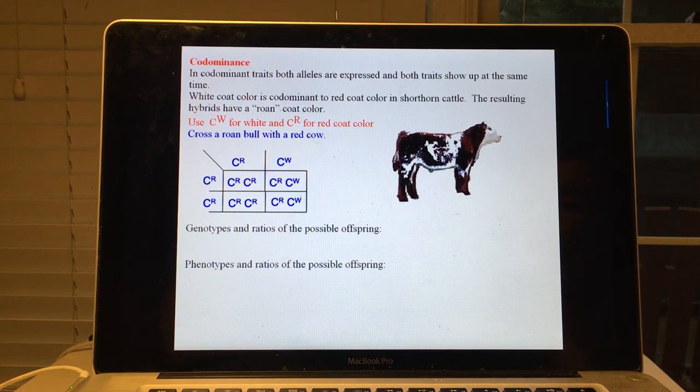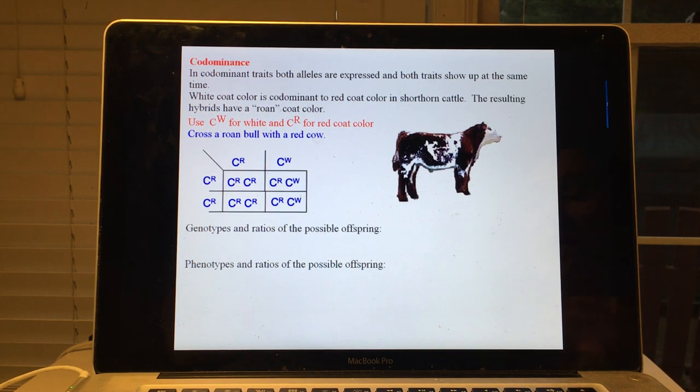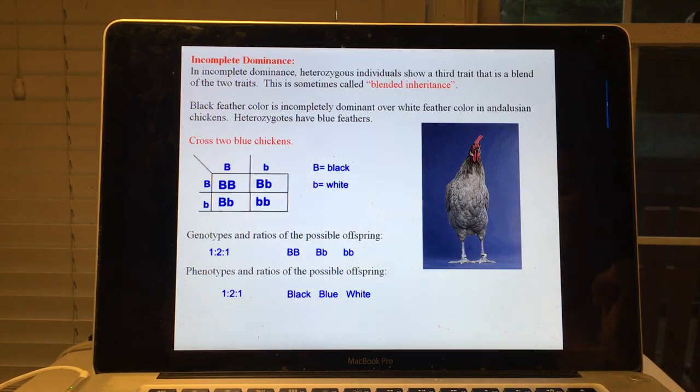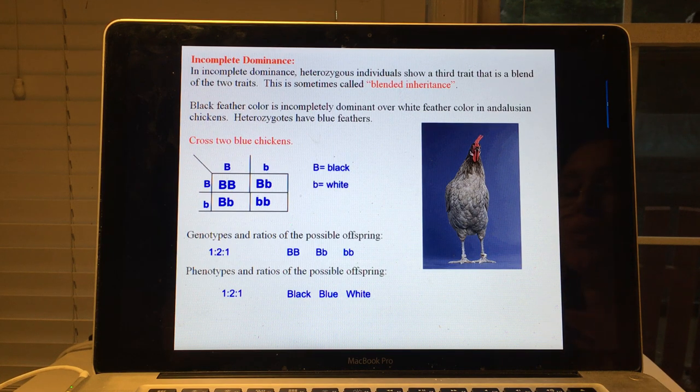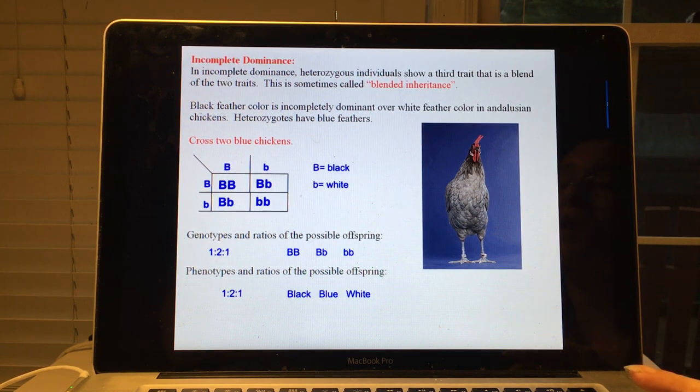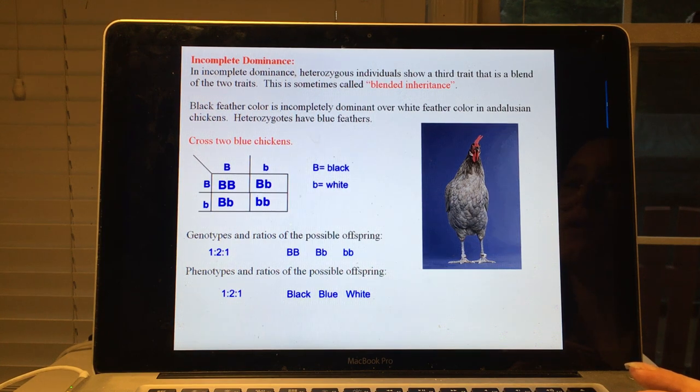Now you might notice that the notation is different with incomplete dominance. With incomplete dominance, if we go back to this previous slide, we still use the upper and lowercase letters. There are times where you'll see people use two different letters because one isn't really dominant over the other, and that's fine if you're doing a monohybrid with incomplete dominance. But we're going to be doing dihybrids with incomplete dominance, and having four different letters would get really visually confusing and hard to follow. So in our classes we always use the uppercase and lowercase letters even though one trait isn't truly dominant or recessive over the other.